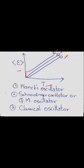The quantum mechanical treatment of harmonic oscillators to illustrate canonical ensemble formulation is now complete. In the next class, we will deal with the statistics of paramagnetism. Thank you.